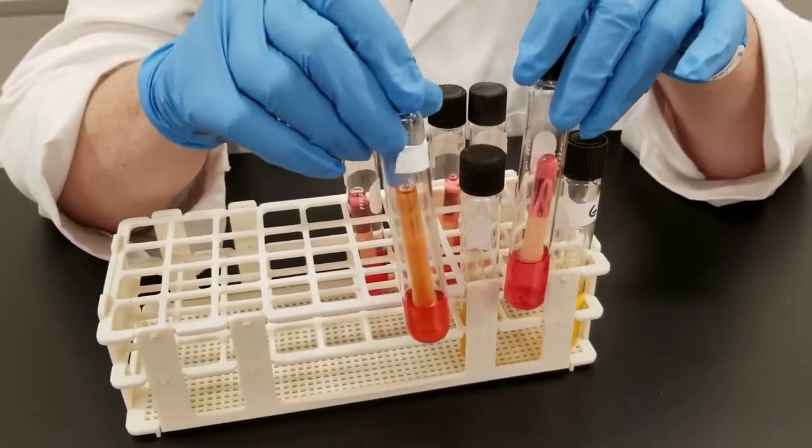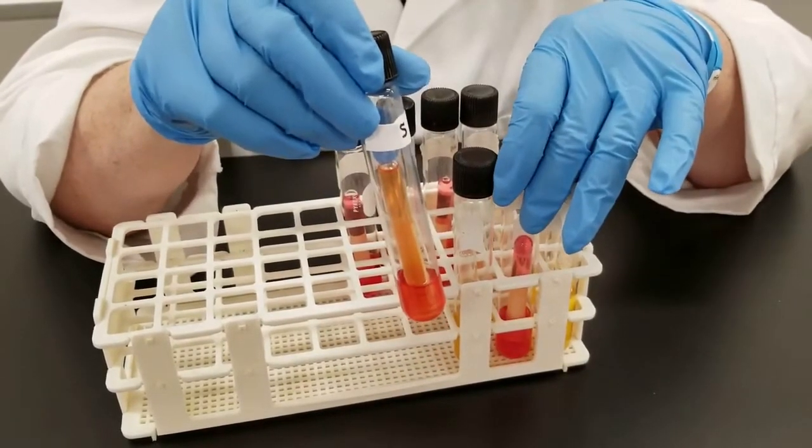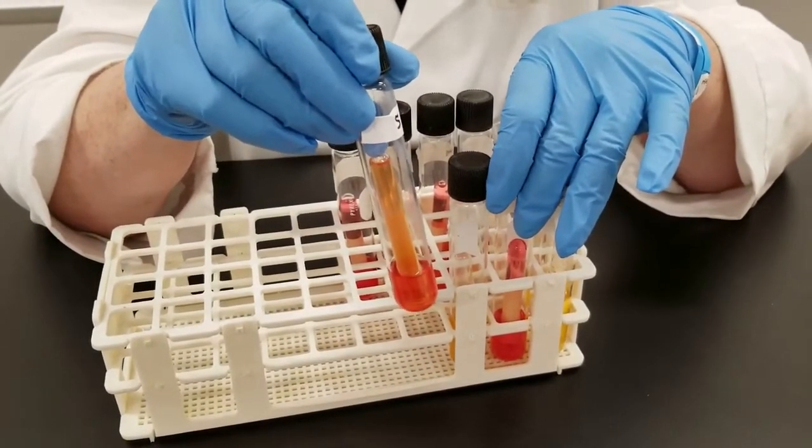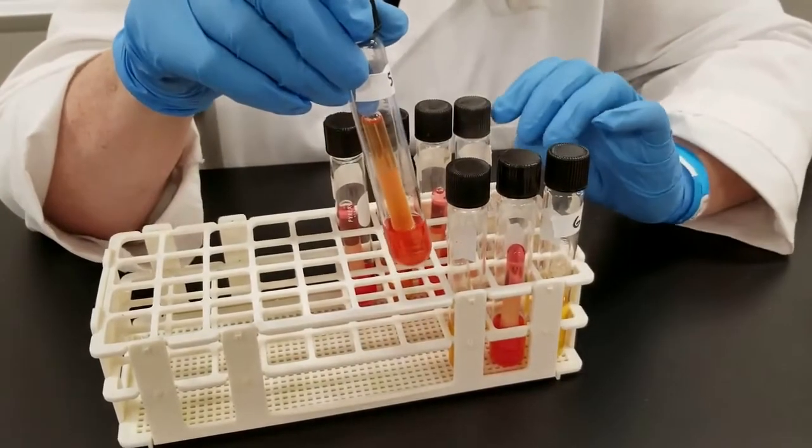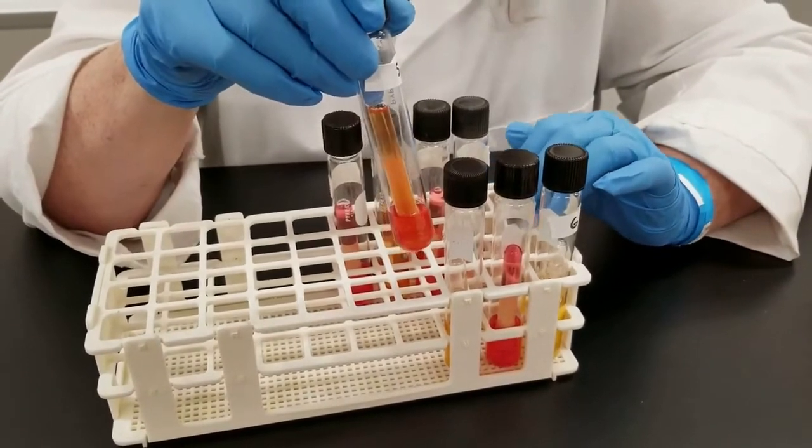Now in this tube over here, if you look at the inverted tube, it is yellow inside there. So the organism has just started growing. Once again, this is E. coli. So you're starting to get some acid production, but no gas.